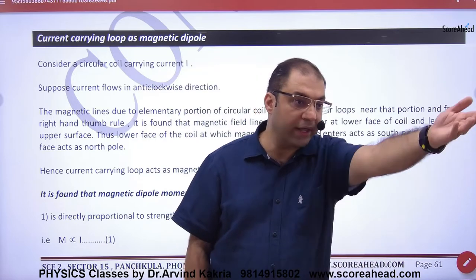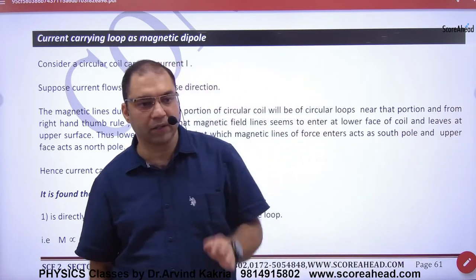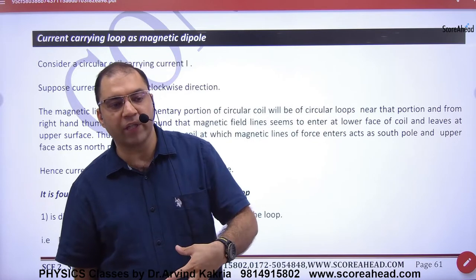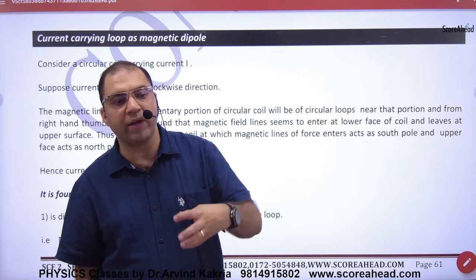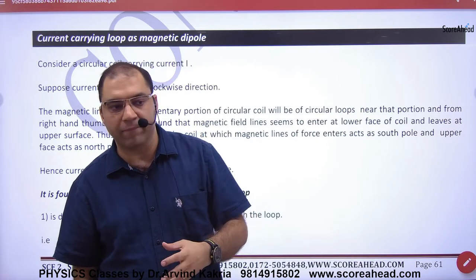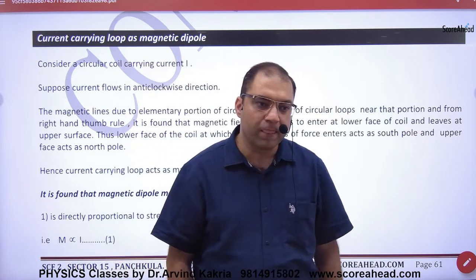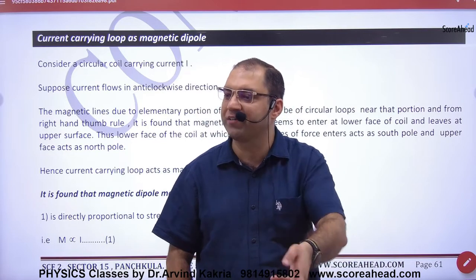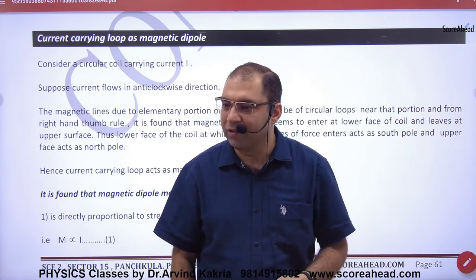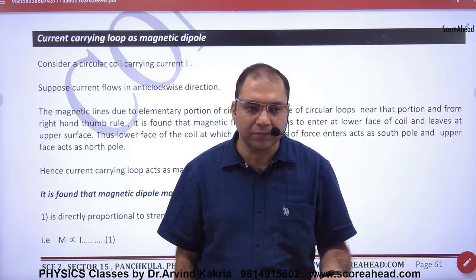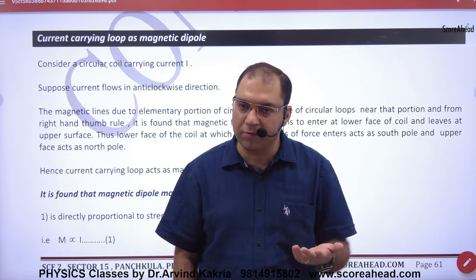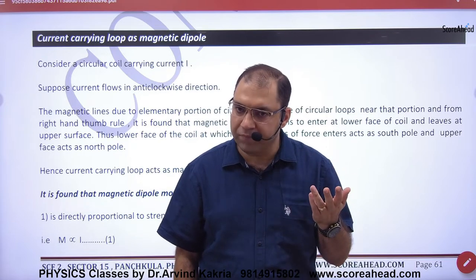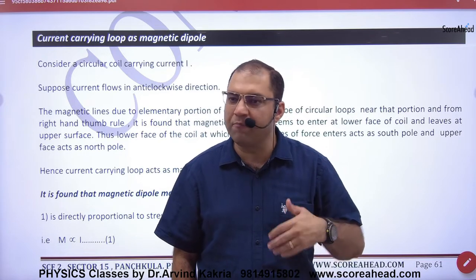A current-carrying loop acts like a magnet. Now, if a current-carrying loop is a magnet, then it will have poles. So we have to make imaginary poles — north and south — because it has B generated. We have to decide the poles.